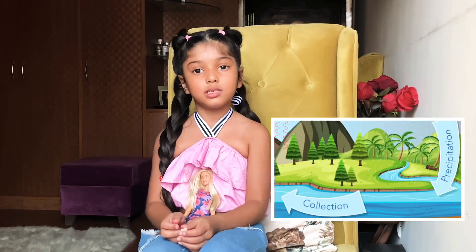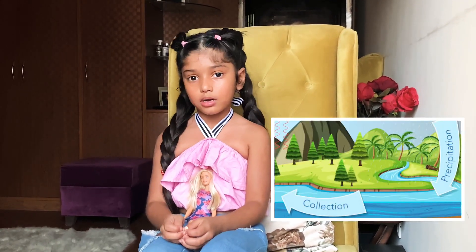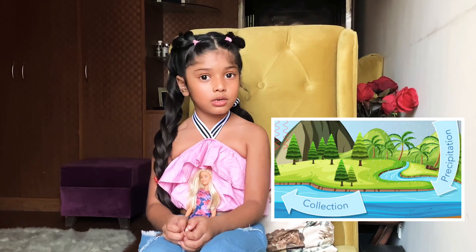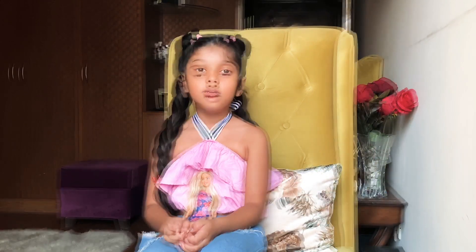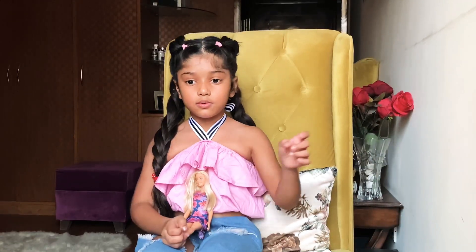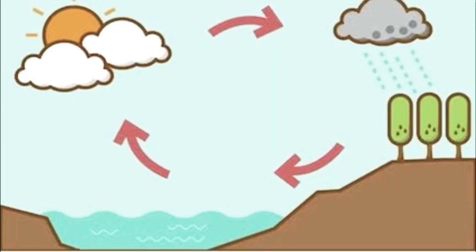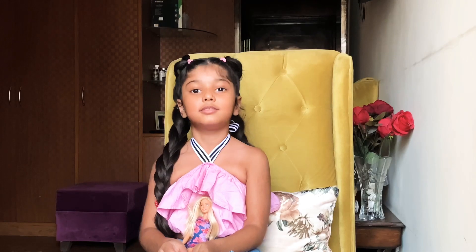The water goes back into the ocean, sea, and river. This process is called collection. This goes like a cycle — that's why it is called the water cycle.